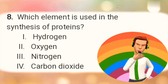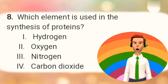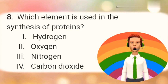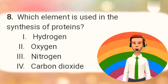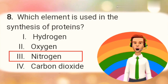Question number 8: Which element is used in the synthesis of proteins? Option 1: Hydrogen. Option 2: Oxygen. Option 3: Nitrogen. Option 4: Carbon dioxide. The right answer is Option 3 — Nitrogen.